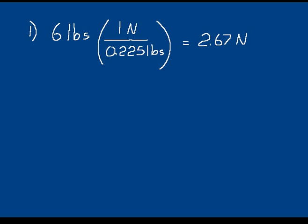In problem 1, you were supposed to convert 6 pounds to newtons, using the equivalent measure 1 newton equals 0.225 pounds. That's how you go from English to SI units using a unit multiplier. Our pounds canceled, leaving us with 2.67 newtons. Just one unit multiplier was needed.